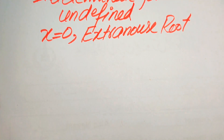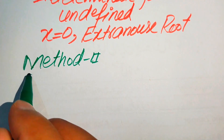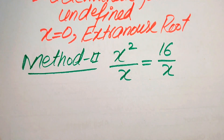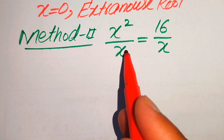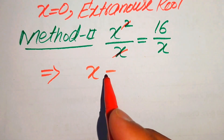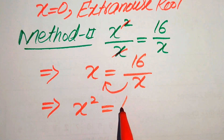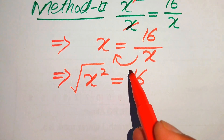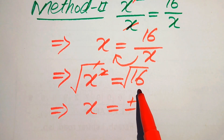Now we solve this problem using the second method. The given equation is x squared divided by x equals 16 divided by x. Here we use a different approach: the x in the numerator cancels with the x in the denominator on the left side, giving x equals 16 over x. Moving x to the left hand side, x times x becomes x squared equals 16. Taking the square root on both sides, we get x equals plus or minus 4.